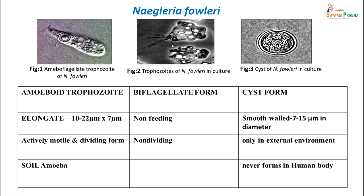When we talk about Naegleria fowleri, it has three morphological forms: the amoeboflagellate form, the biflagellate trophozoite form, and a cyst. The amoeboid trophozoite is an elongated structure which is 10 to 20 micrometers by 7 micrometers. It is the actively motile and dividing form, the feeding form, and it is also found in soil. The biflagellate form is the non-feeding, non-dividing form with two flagella.